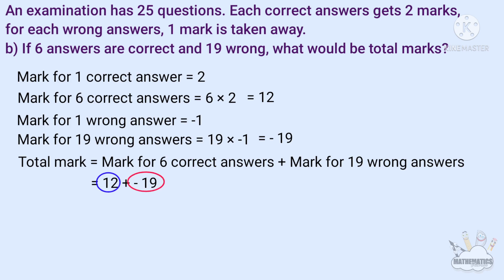If you have 12, with a negative 19, the negative number is larger, so the result is negative. That is minus 7.